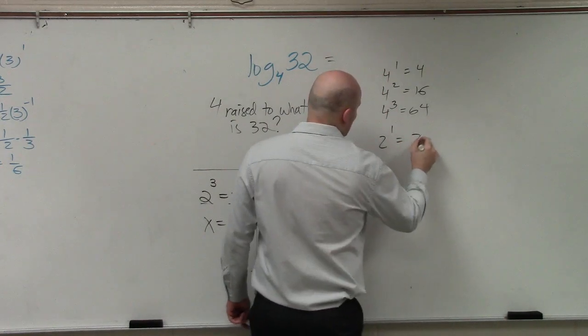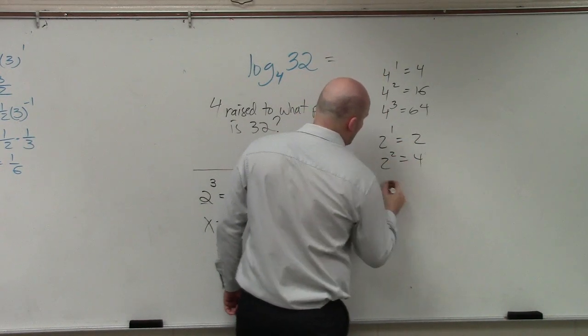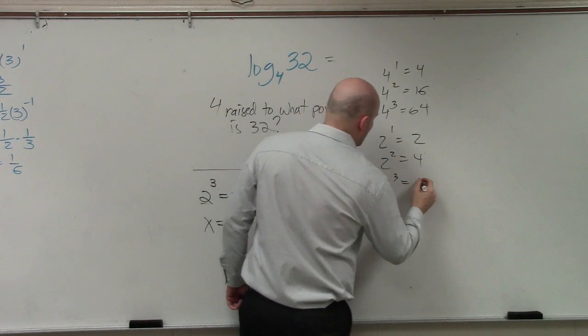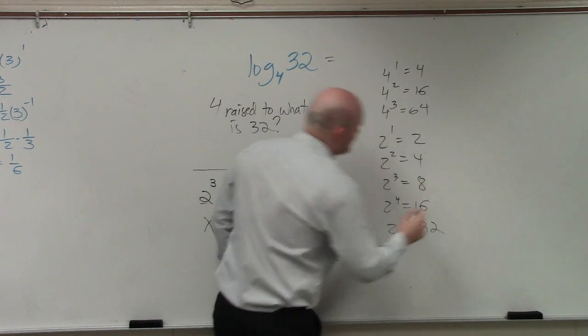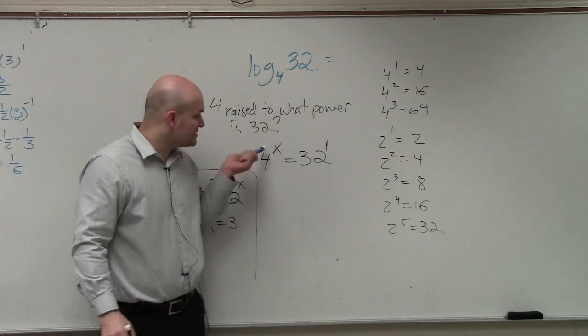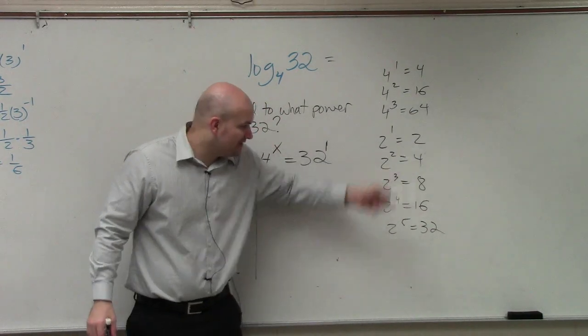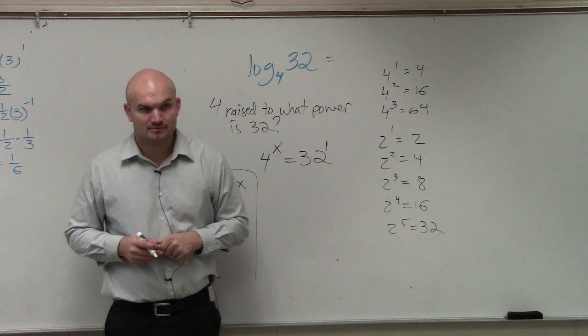2 to the first power is 2. 2 squared is 4. 2 cubed is 8. 2 to the fourth is 16. 2 to the fifth is 32. Do you guys see that when I raise 2 to a power, I can get 4 and 32? So watch.